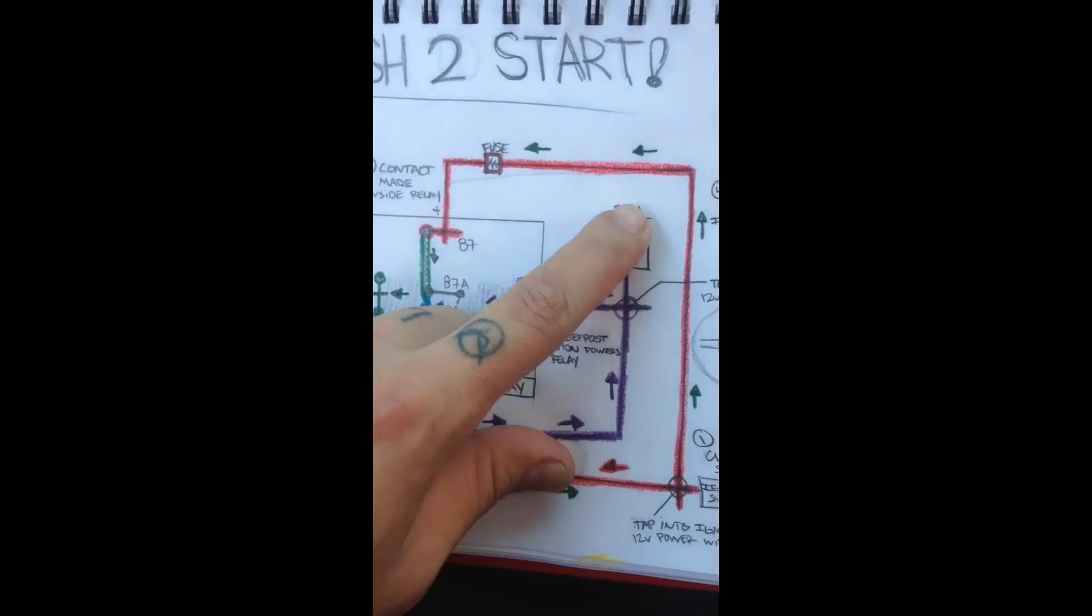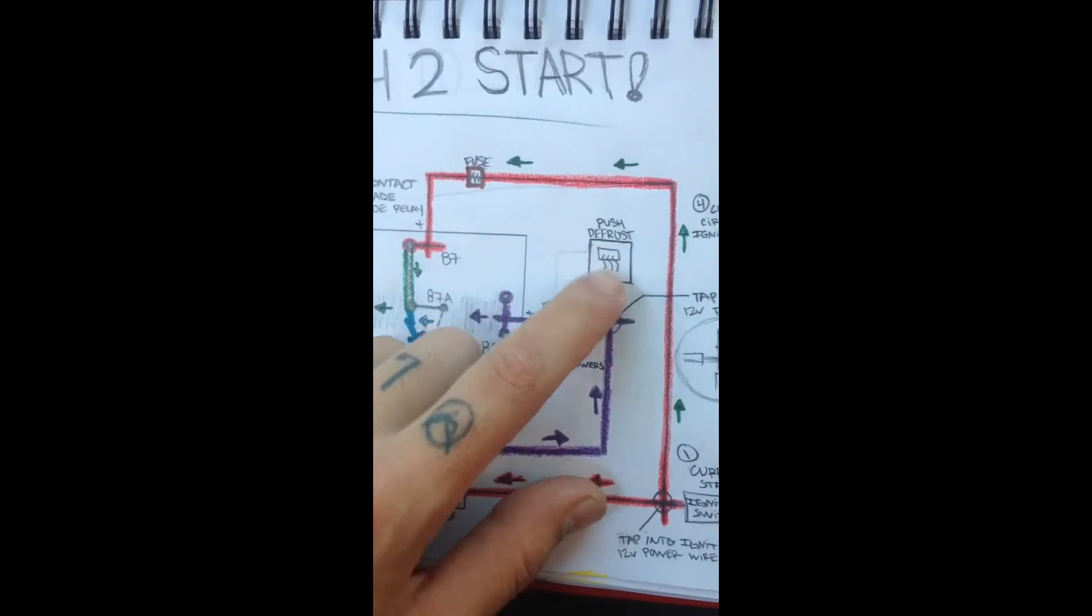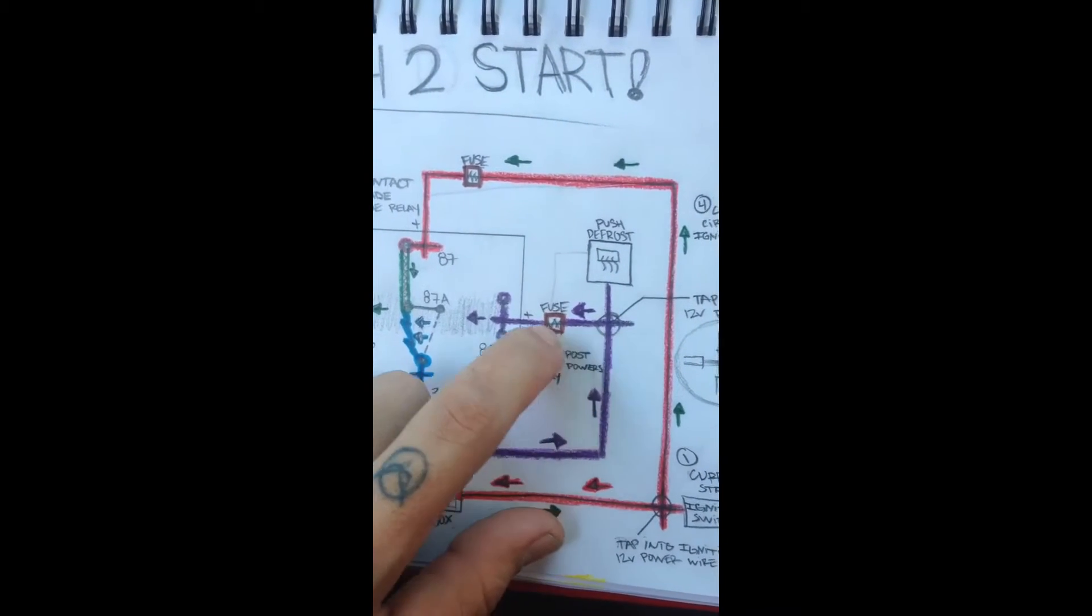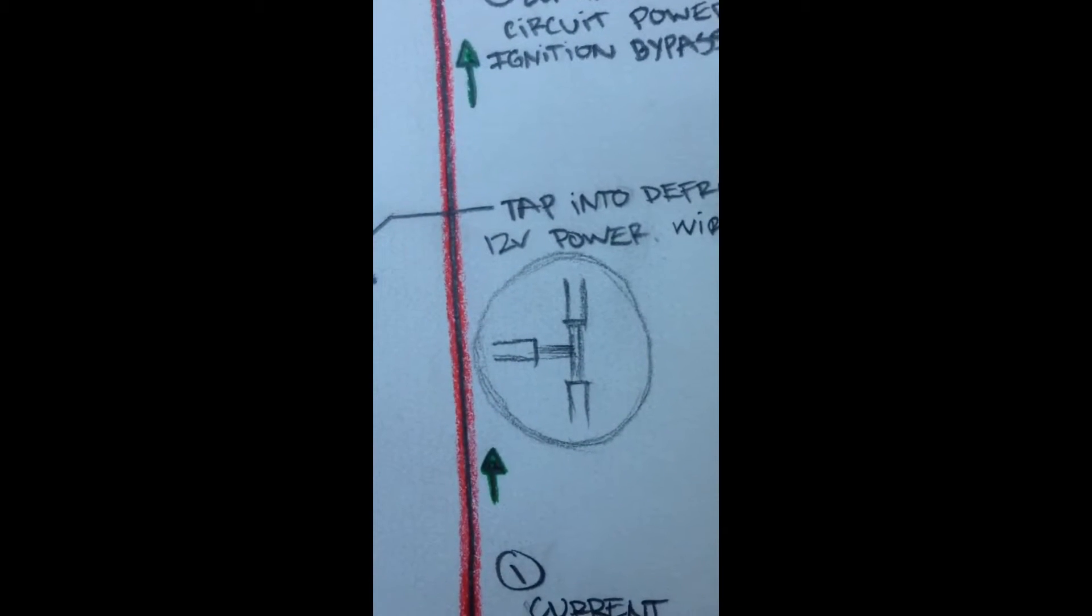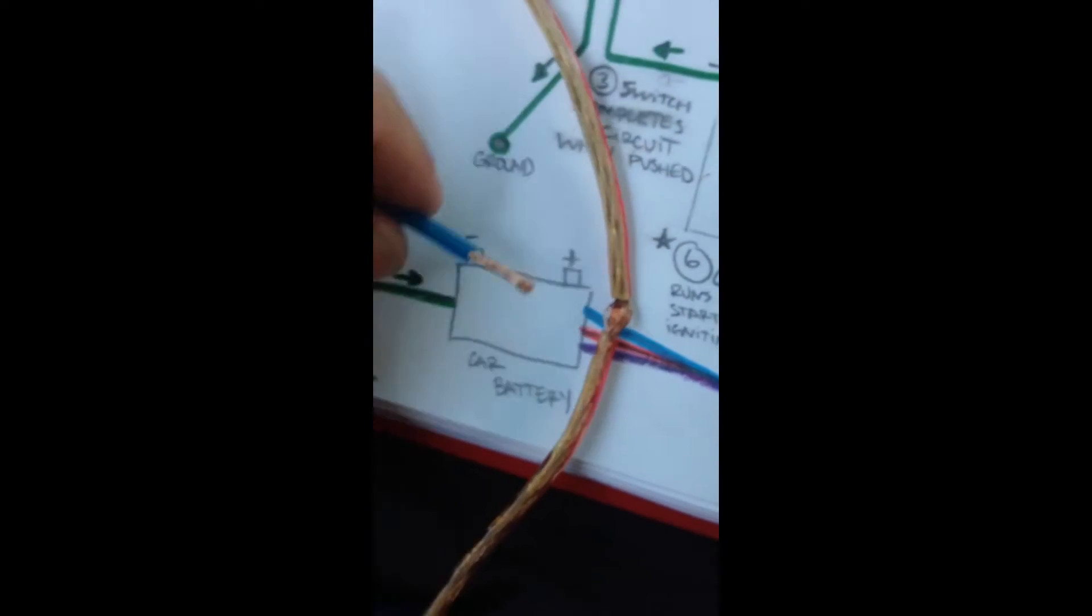Power is then given to your defrost button. As soon as I pushed my defrost button, I bypassed wire, and what I mean by bypass is a little picture that I drew out right there. But if you can't understand that, bypass.